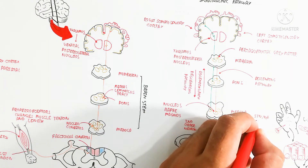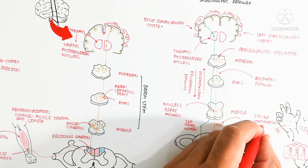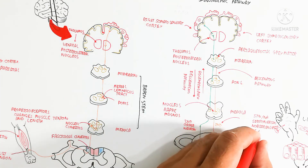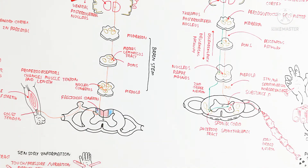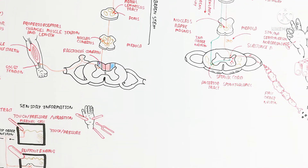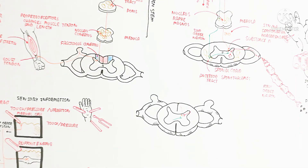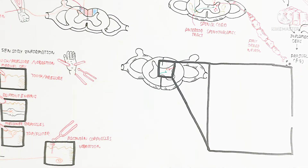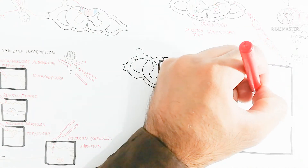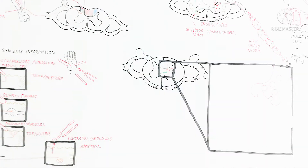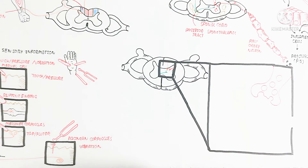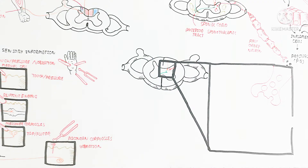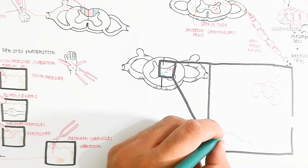The periaqueductal grey matter is involved in the descending pathway, which modulates pain. In this descending pathway, the second-order neuron synapses occur for the sensory neuron, and these synapses produce substance P, which is the neurotransmitter for pain.